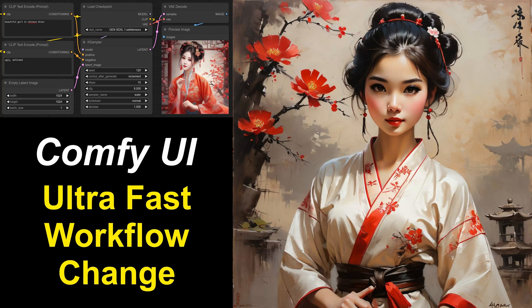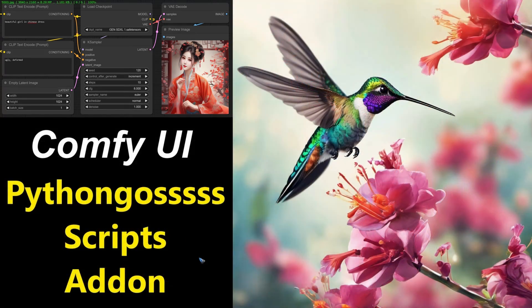Some custom node developers are quite active and keep adding new functions to their custom nodes. Python Gauss is one of them. A while ago I already did a video on his Python Gauss scripts, which have a slew of very handy functions for ComfyUI to work with. And now he added some new functions to quickly change our workflows. If you missed the previous video, the link is in the description.